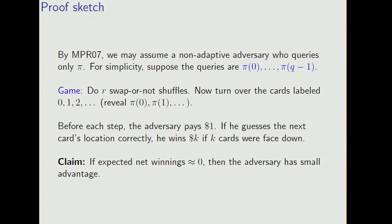So notice that if this were a uniform permutation, then it would be a fair game. I claim that if the adversary's expected net winnings is close to 0, then the adversary has small advantage in the sense I defined earlier.